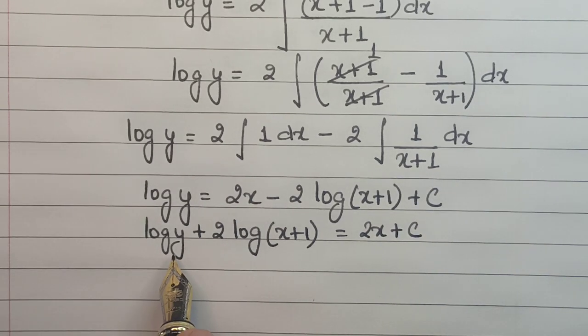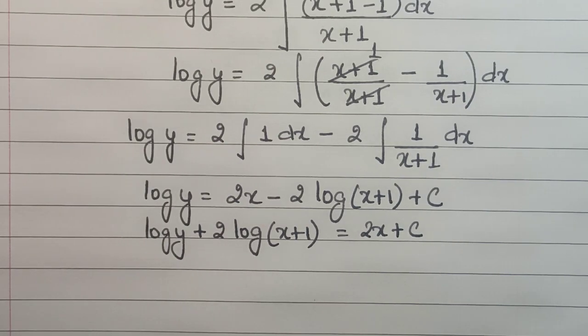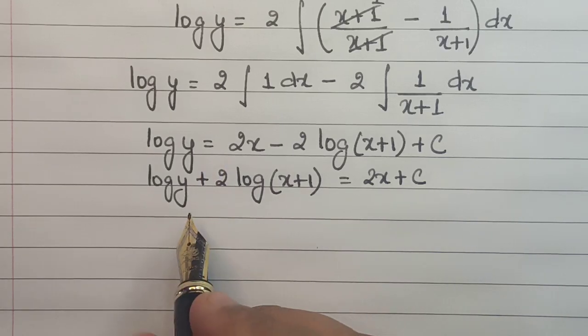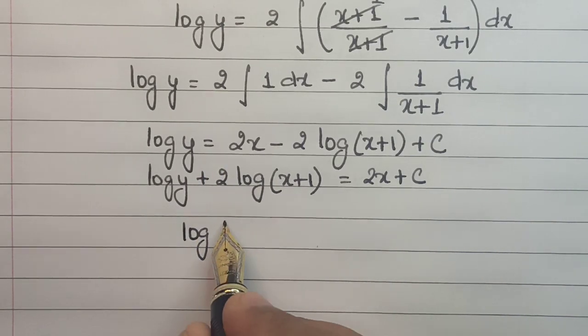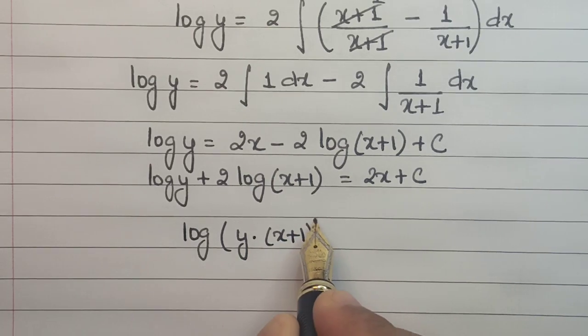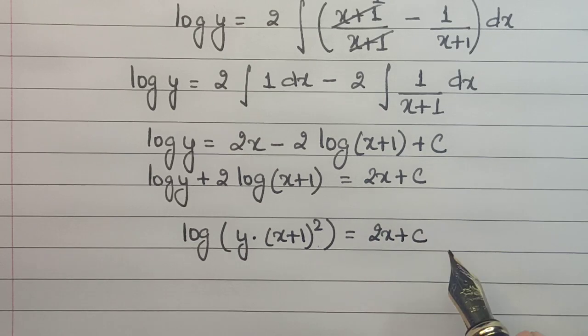We have a property in log which is log a + log b is written as log(a·b). So this can be written as log[y·(x+1)²] = 2x + c.